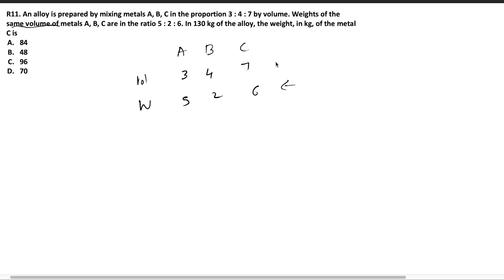So in the question, we are given that the volume is in the ratio 3 is to 4 is to 7. And we know that the weight per volume is 5 is to 2 is to 6. All you have to do is to multiply volume with weight per liter or weight per meter cube, which is basically the density. So density is equal to mass by volume. And to get the mass, you have to multiply density into volume. So that's what we are doing here. Multiply 3 into 5, you will get 15. 4 into 2, you will get 8. 7 into 6, you will get 42.